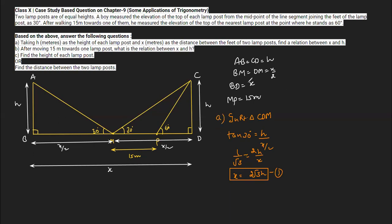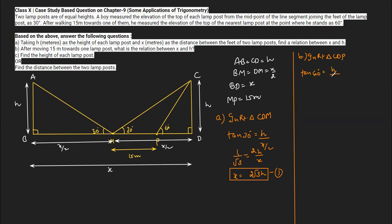Now for part B: after moving 15 meters toward one of the lampposts, what is the relation between x and h? The boy moves from M to P, covering 15 meters. We use right triangle CDP. In right triangle CDP, the angle is 60 degrees, so we write tan 60 equals perpendicular upon base, which is h upon the base distance.